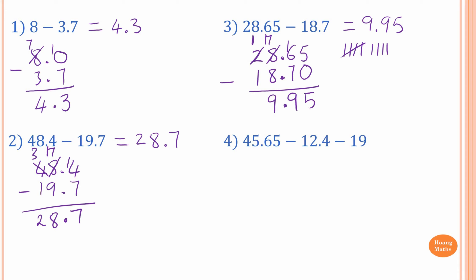Fourth one: 45.65 take away 12.4 take away 19. The easiest way is to do one at a time, left to right. So 45.65 minus 12.4 — make sure the place values are correct, decimal point right underneath each other. 12.4 is exactly the same as 12.40. So 5 take away 0 is 5, 6 take away 4 is 2, decimal point, 5 take away 2 is 3, and 4 take away 1 is 3. The answer is 33.25.